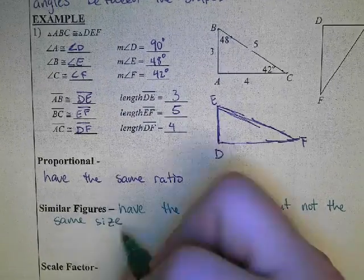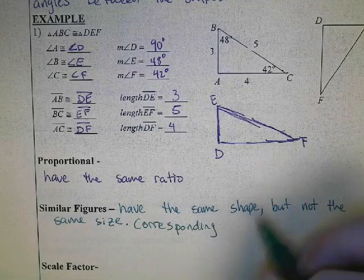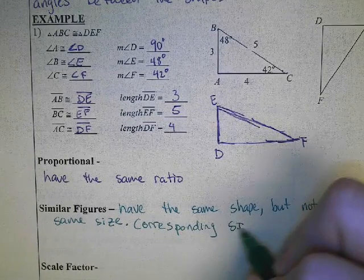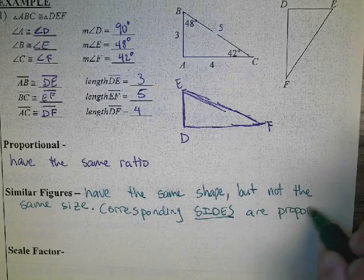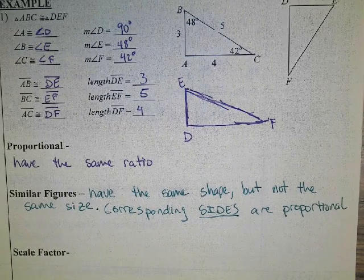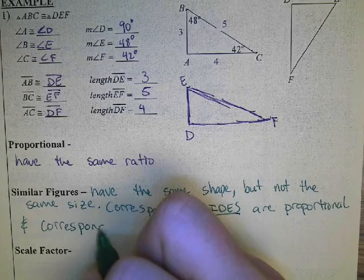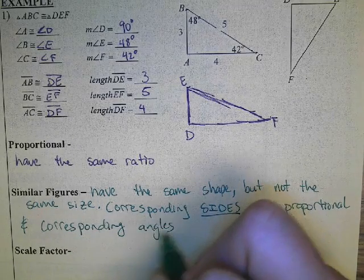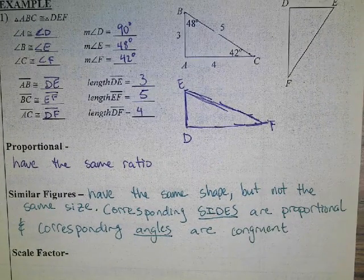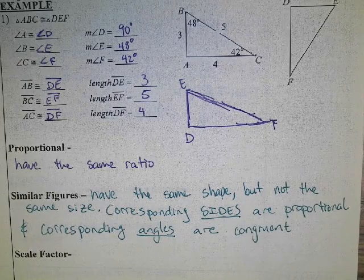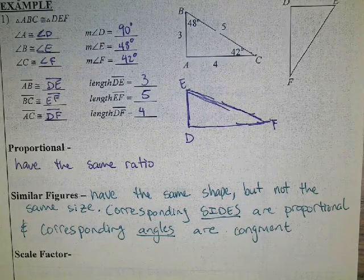Corresponding sides are proportional, and corresponding angles are congruent. So the angles for similar figures will be equal to one another. But I can shrink the shape, the angles stay the same, but the side length is what's changing.